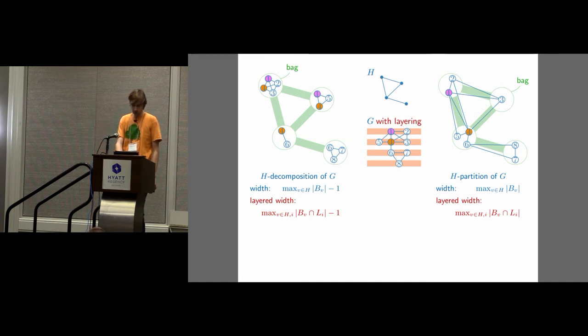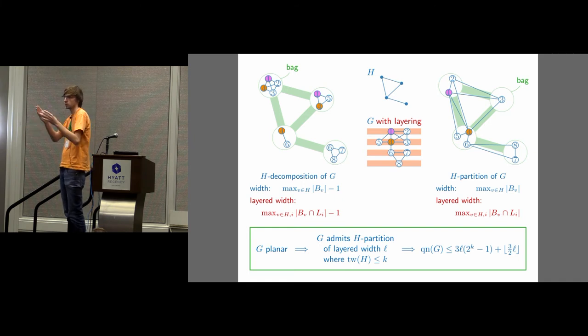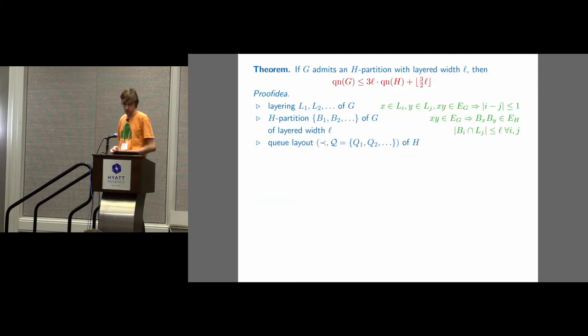And now, our structural result is the following. If G is planar, then G admits an H-partition of layered width L, L is a constant, so that H has constant tree-width. So it's kind of the partition and the decomposition nested in one side, inside each other. So G admits a partition into H, where H admits a decomposition into a tree. And from this, and then you have these numbers, like the L and the K, and from this, we can derive a bound on the Q number as a function of L and K, and since these were all constants, we get a constant bound.